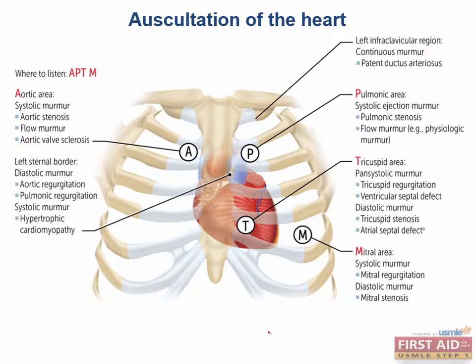Before we get rolling, we need to remind ourselves that the location at which heart sounds or murmurs are heard best does not necessarily correlate with where the valves are located anatomically. We have mnemonics like 'all prostitutes take money' — these represent the different locations where we can hear murmurs best. They do not represent the location of the valves, but rather where you can hear the murmurs best. Remember that.